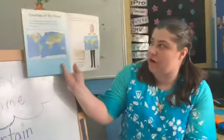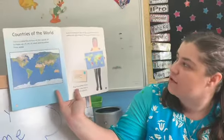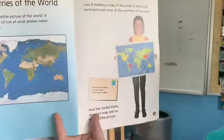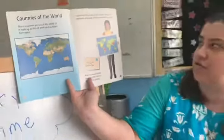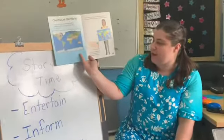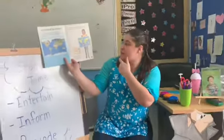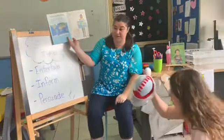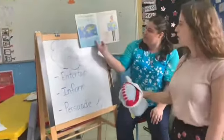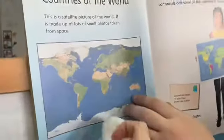This is a satellite picture of the world, made up of lots of small photos taken from space. Lucy is holding a map of the world — it shows the continents and some of the countries of the world. Find the United States on Lucy's map and on the satellite picture. Now we can find the US but we can also find Thailand — that's even harder. Here's the US, here's Thailand — it's very small. And this is my home down here: Antarctica!